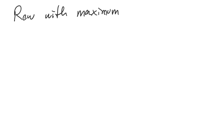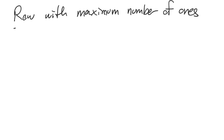So let's write down the problem: find the row with the maximum number of ones. I'm writing this with a pen to emulate the whiteboard coding environment you'll encounter during a coding interview. To understand how this problem works, we're going to start with a few examples. Our input is a matrix — actually a nested list, in other words a list of lists.